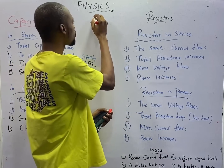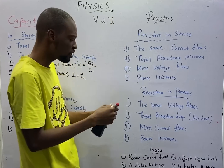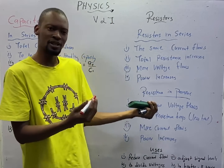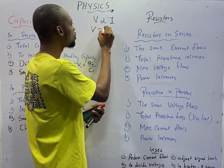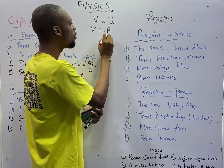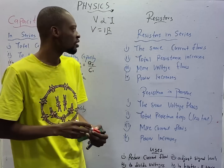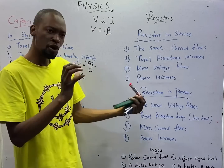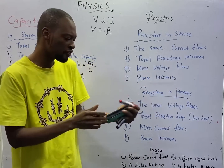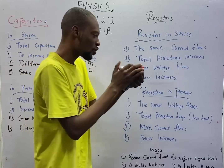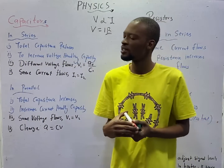According to Ohm's law, voltage is directly proportional to current, which means the higher the voltage, the higher the current. This is expressed as V = IR, where resistance is the proportionality constant. Voltage is what actually pushes the current — that is the potential difference. As voltage increases, current increases.